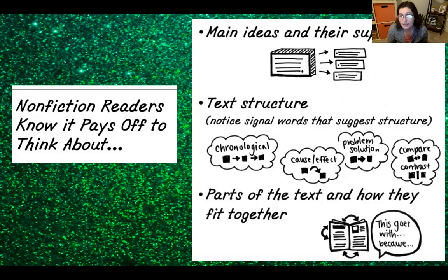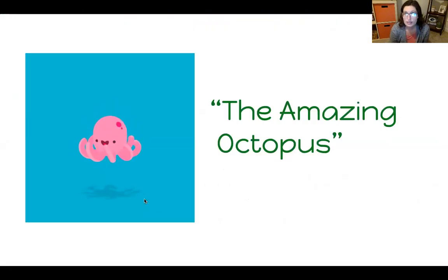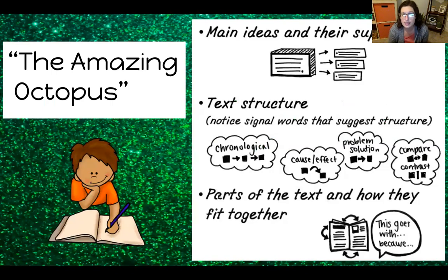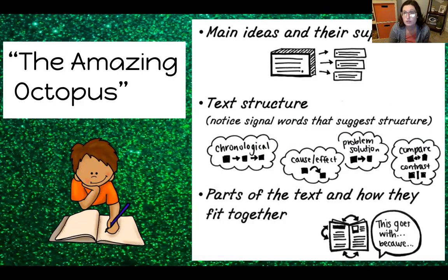The third bullet point: parts of the text and how they fit together. This could include a sentence stem like, 'This goes with blank because.' Nonfiction readers know it pays off to think about all of these items. Today we're going to read a short nonfiction text called The Amazing Octopus. As we're reading, I want you to think of these three bullet points, though bullet points two and three are tricky, so focus on bullet point one — what are the main ideas and details? Please have your notebook or whiteboard out to write down notes. We will go over our notes at the end.